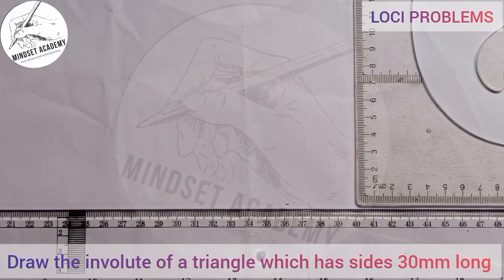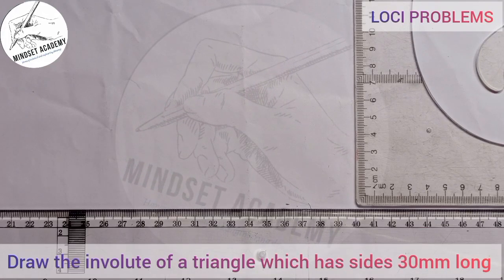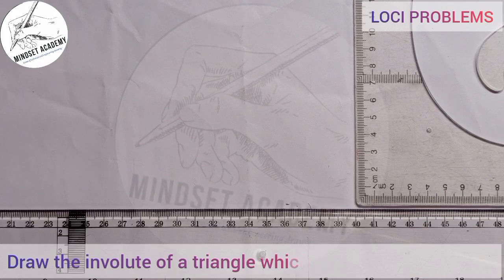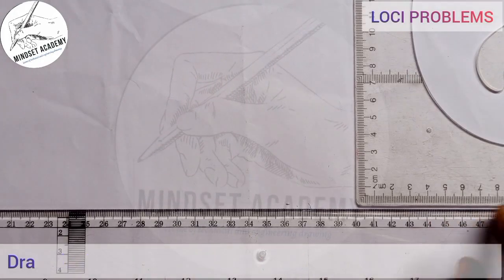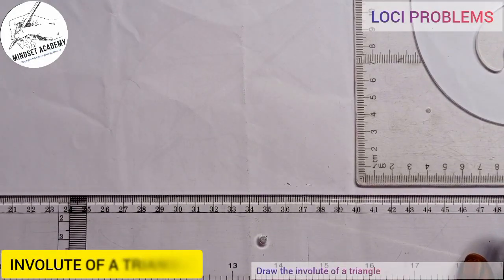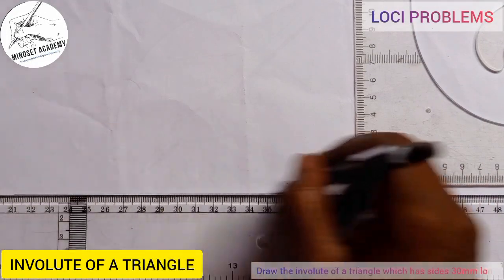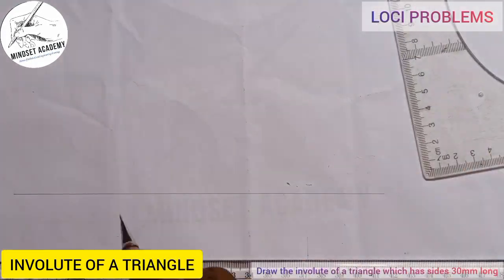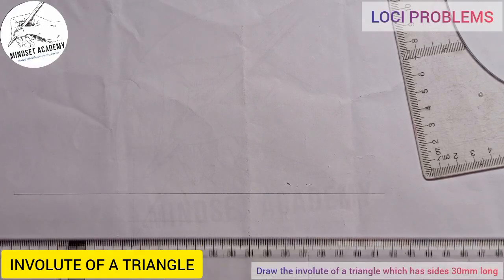The involute of a triangle which has sides 30 millimeter long. The first thing you're going to do is draw your horizontal line this way. On that line you pick a point, let's say that point is point A.